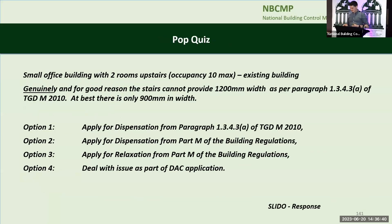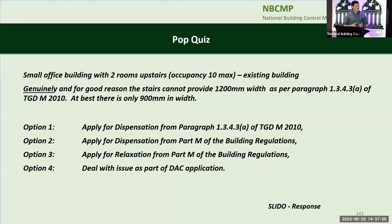To start off, and it's on Slido — I can't bring it up on screen so I just have it on my phone. Small office building with two rooms upstairs, say a maximum occupancy of 10 people. It's an existing building and genuinely, for a good reason, the stairs cannot provide a 1,200mm width as per paragraph 1343A of Technical Guidance Document M 2010. At best we can design 900mm. So we have four options: apply for a dispensation from paragraph 1343A; apply for a dispensation from Part M; apply for a relaxation from Part M; or deal with the issue as part of the DAC application.